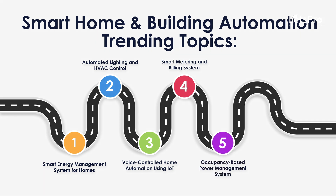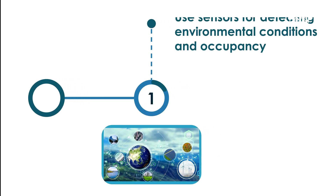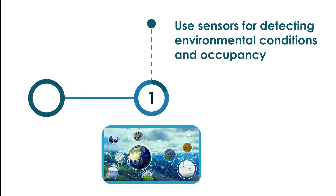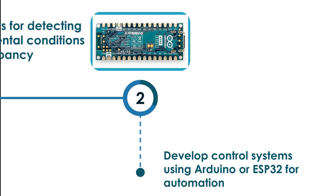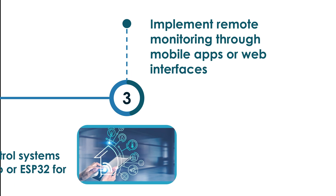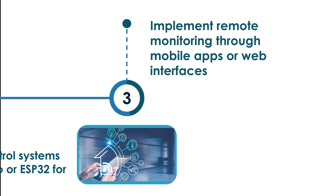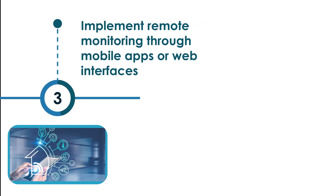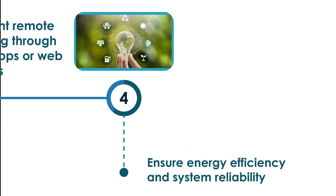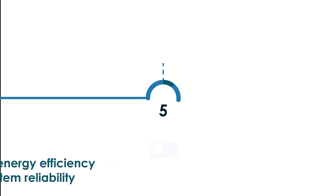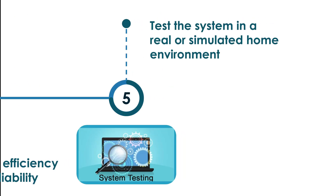Prototype Development: Use sensors for detecting environmental conditions and occupancy. Develop control system using Arduino or ESP32 for automation. Implement remote monitoring through mobile apps or web interfaces. Ensure energy efficiency and system reliability. Test the system in a real-time simulated home environment.